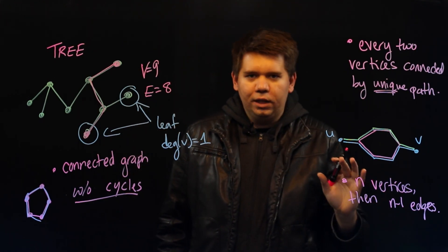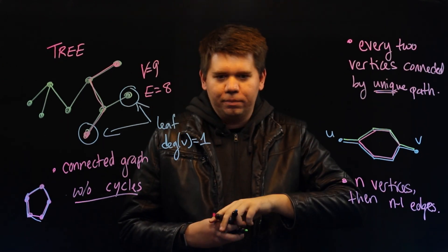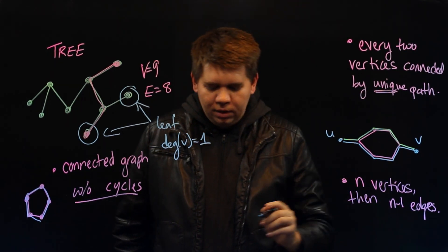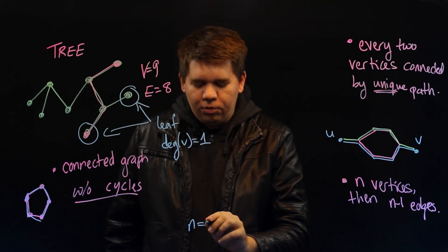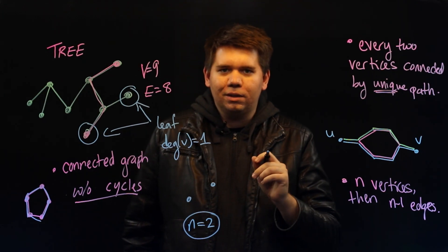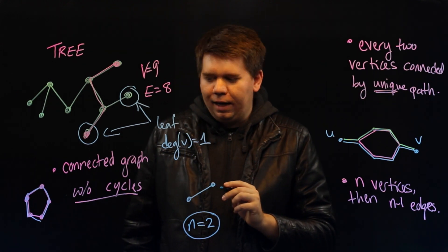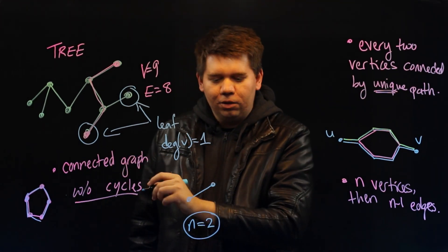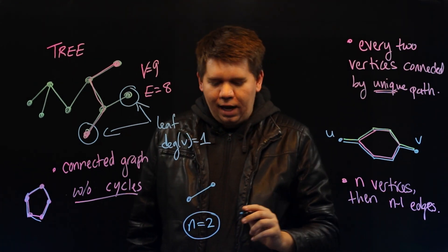Why is this true in general for trees? We can prove it by induction. Let's suppose we just think about the simplest case where n equals 2. Where there are just two vertices in your tree. Then they'll have to be connected by an edge in order to make sure it's a connected graph. And so you'd have two vertices and one edge.